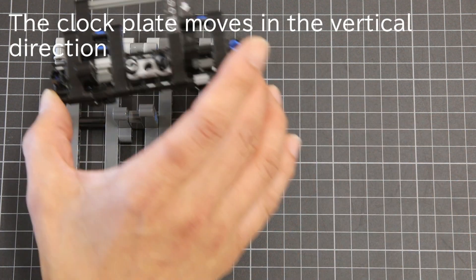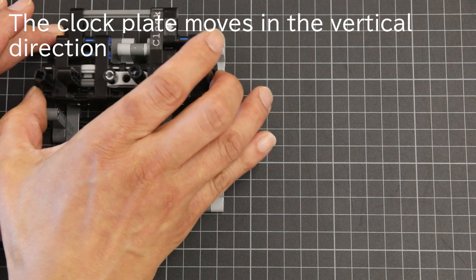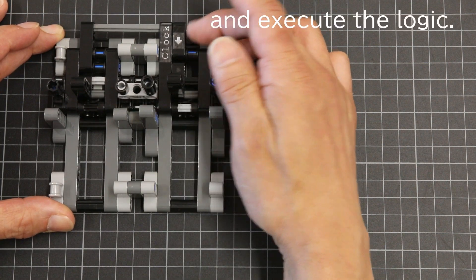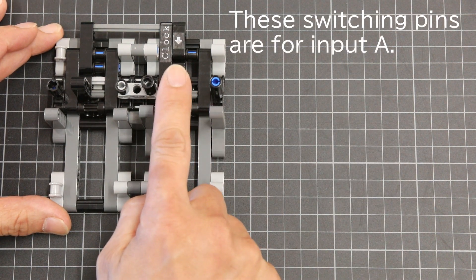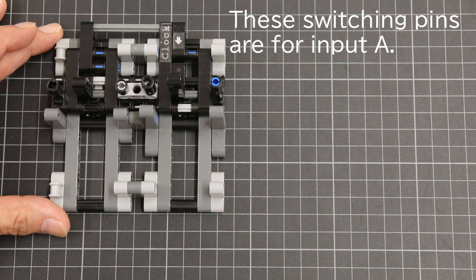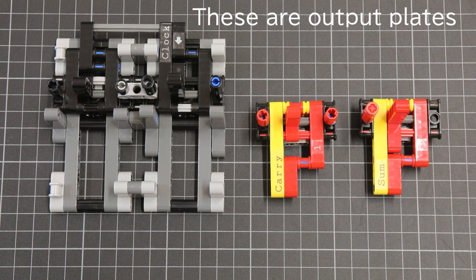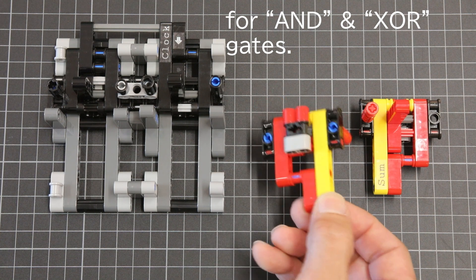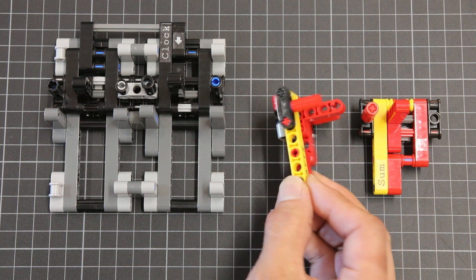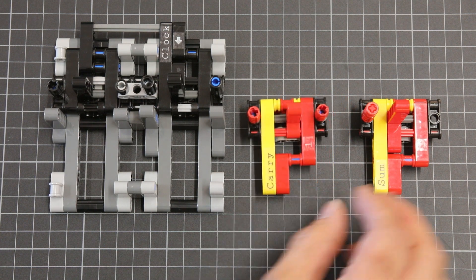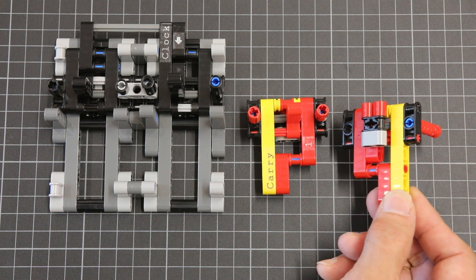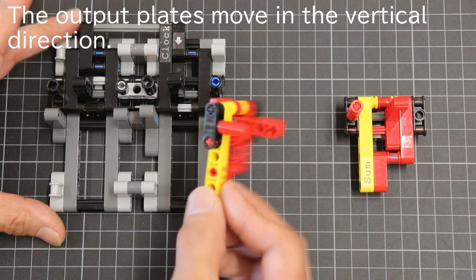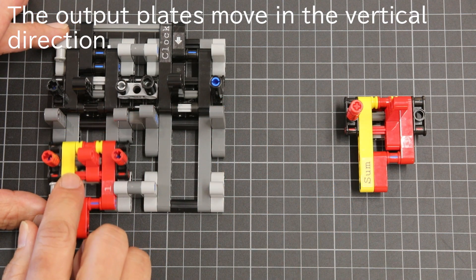The clock plate moves in the vertical direction and executes the logic. These switching pins are for input A. These are output plates for AND and XOR gates. The output plates move in the vertical direction.